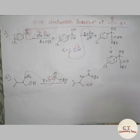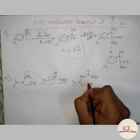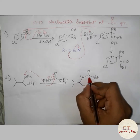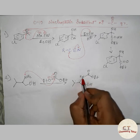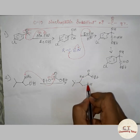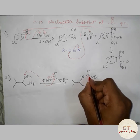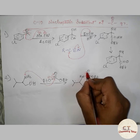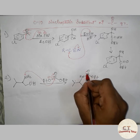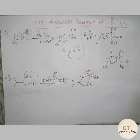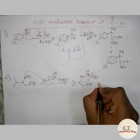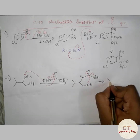Now the lone pair of oxygen can attack again, since there is a possibility of forming a five-membered ring — one, two, three, four, five. So it will attack at the carbonyl carbon, the negative charge will go to the oxygen and come back, and the leaving group will leave, giving a stable five-membered ring product.